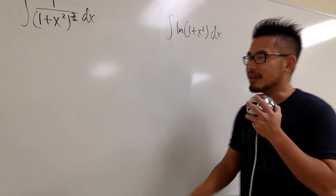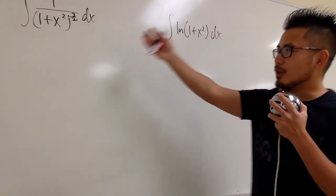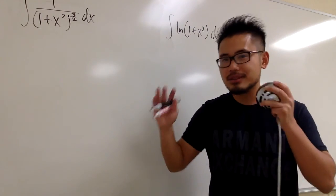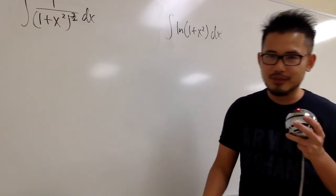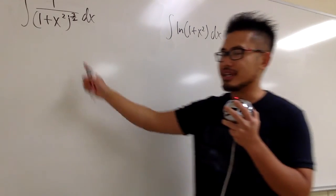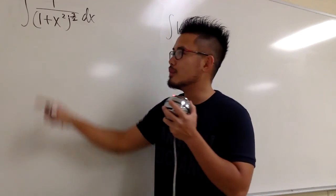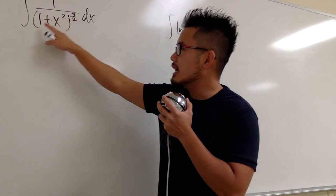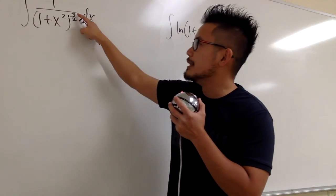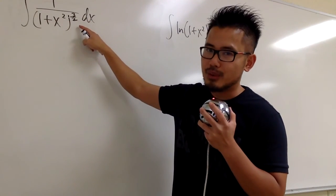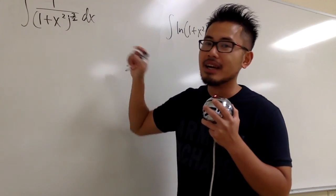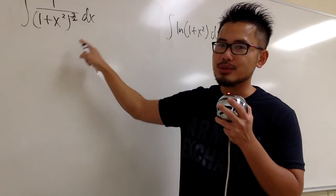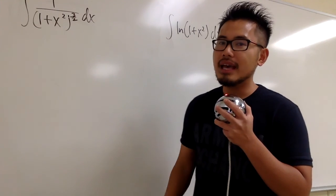Even though they both have 1 plus x squared, the way to do them is totally different. Let's look at this one first. We have 1 plus x squared raised to the 3 over 2 power — I'm going to use trig substitution right here.